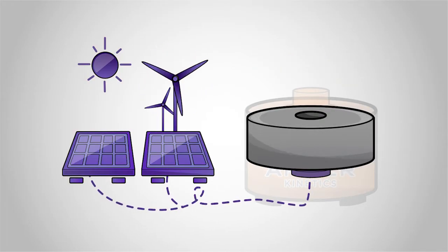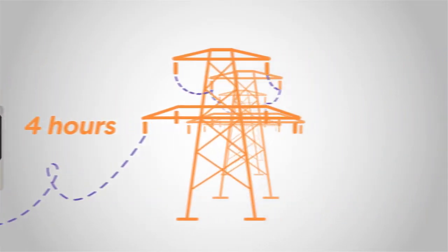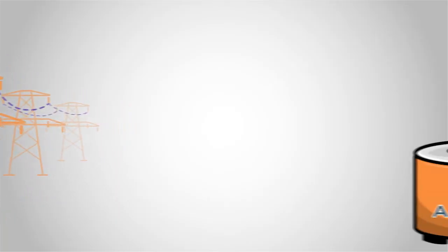When initiated by the control system, the electric motor becomes a generator turned by the momentum of the flywheel. Energy flows out when it's needed.